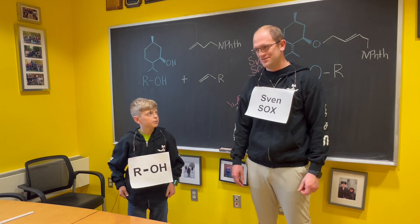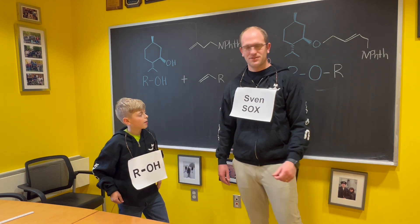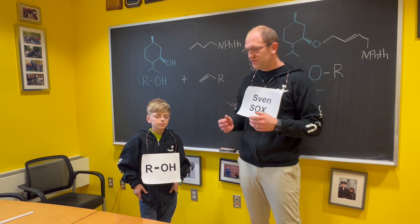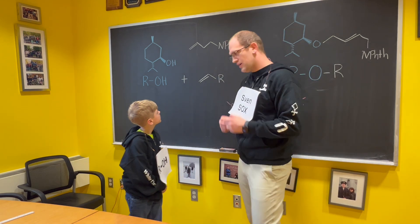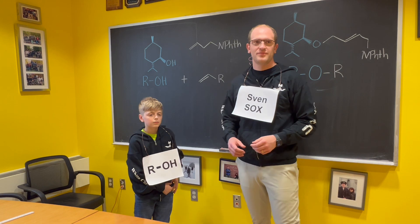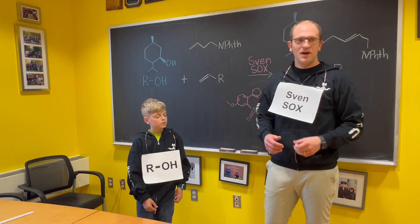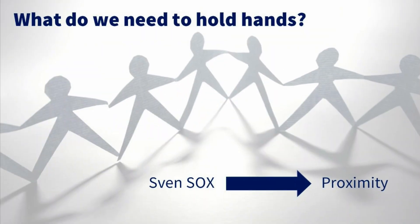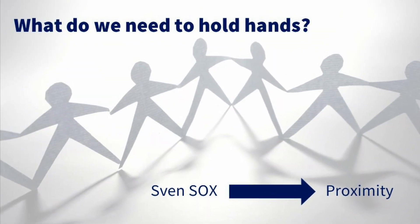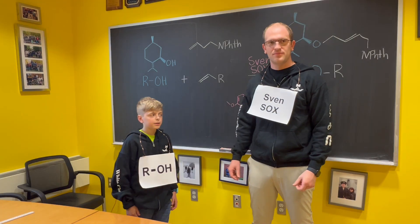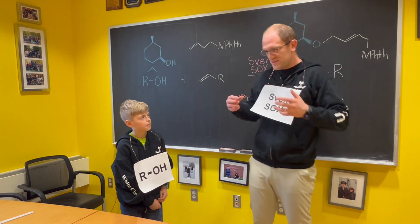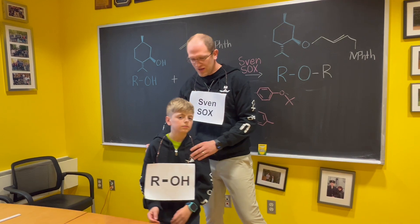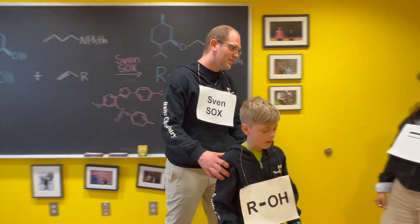What is the SvenSOX catalyst doing to make this reaction happen? That's a good question. SvenSOX is acting like a little robot that you put in your reaction to make it go faster. Catalysts can even make reactions like this one — that would never happen — happen. Imagine a successful reaction like the one you just ran; it can be represented by holding hands. We need to be close together. So that's what SvenSOX is doing — this is what we call proximity. SvenSOX is helping to take the alcohol into proximity with the olefin.